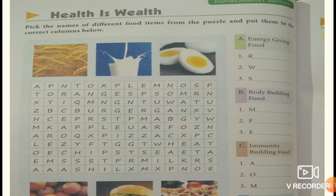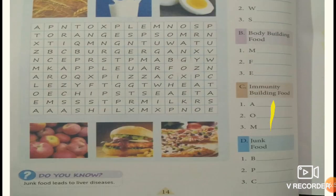Pick the names of different food items from the puzzle and put them in the correct column below. Energy-giving food: rice, wheat, and sugar. Body-building food: milk, fish, egg. Immunity-building food: apple, orange, mango.